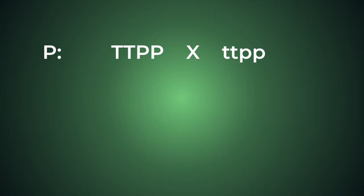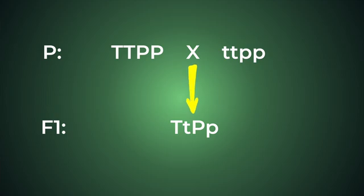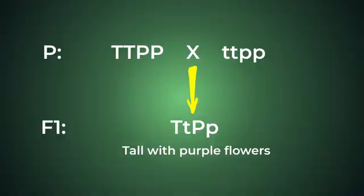Now, when we cross the parent plants, the result is pretty simple — we don't really need to do a Punnett square for that. Since we have one parent with all dominant alleles and one parent with all recessive alleles, all of the offspring in the resulting F1 generation are going to be heterozygous: big T little t big P little p. These plants get one of each allele from each parent, so it makes sense.